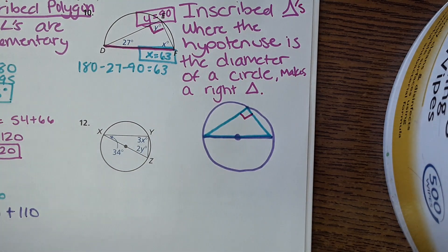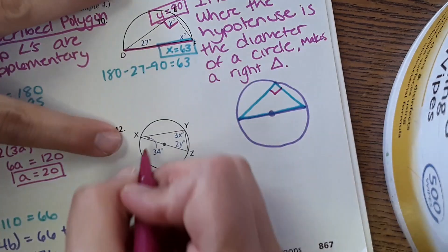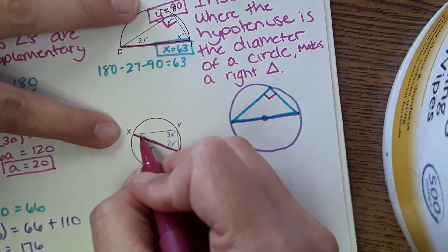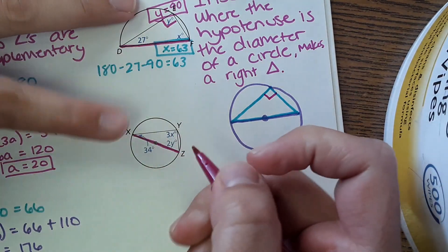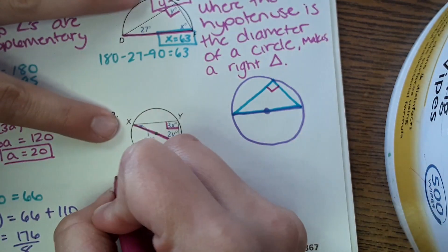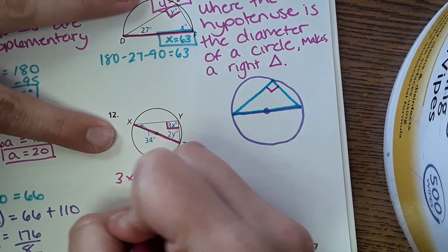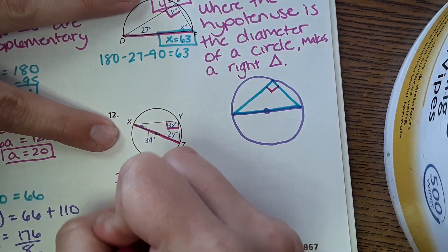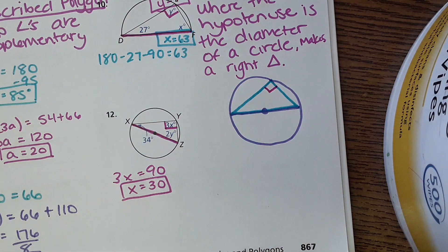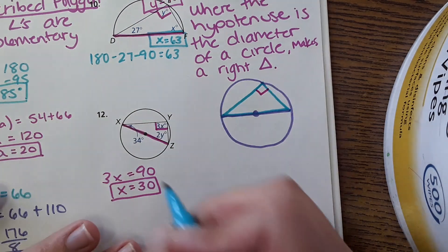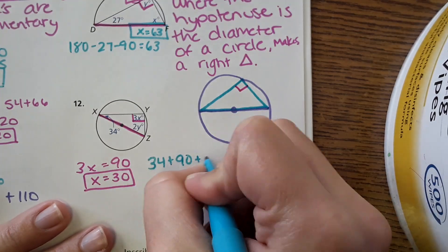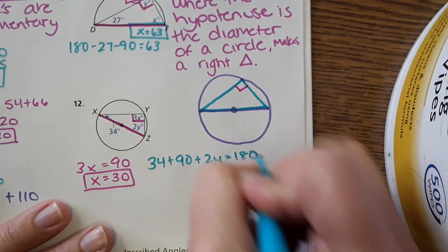Problem 12 uses the same idea — the hypotenuse is the diameter, so it's a right triangle. The three angles add to 180°, and since one is 90°, we get 3x equals 90 and x equals 30. For 2y: 34 plus 90 plus 2y equals 180, and we solve for y.